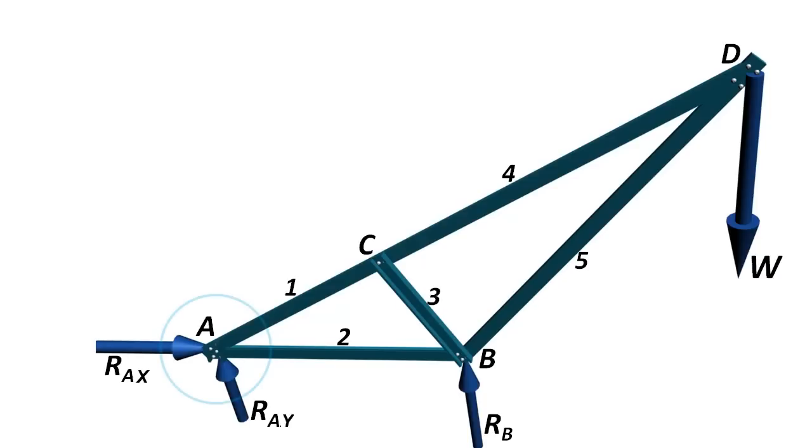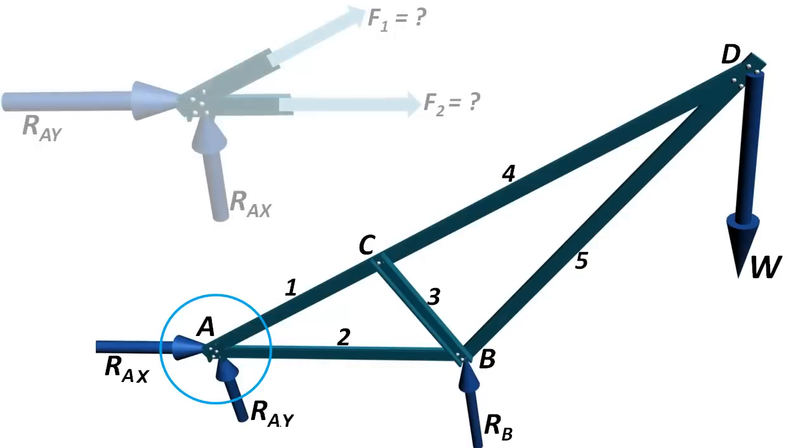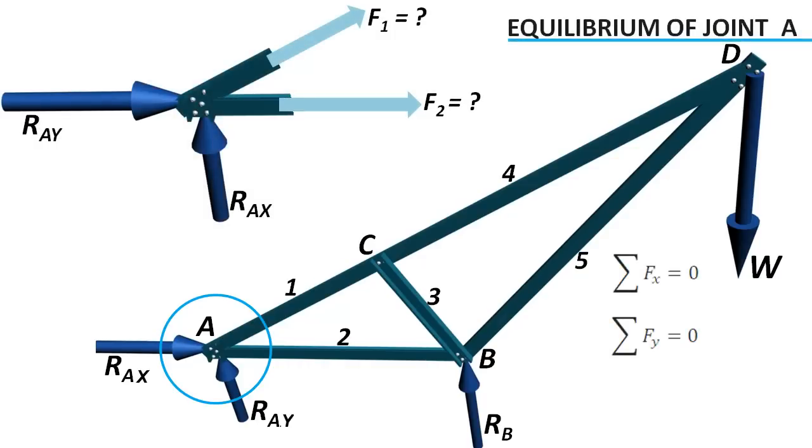Let's start with joint A. Forces in both members can be solved using the equilibrium formula. If sign of any force comes negative, that means that member is under compression.